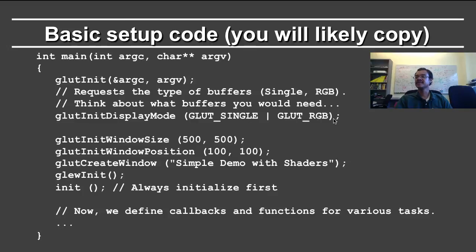I set the window size, window position, create the window, and then there is something that happens just in order to set up the program — required to get all the functions to work correctly — that's GLEW init. And finally, I call my own initialization. In the next part, I'm going to show you that I register callbacks for various keyboard and mouse actions.